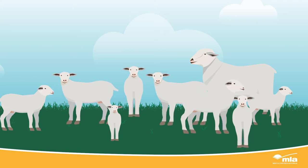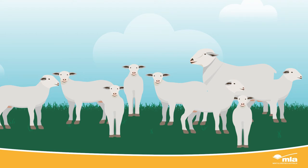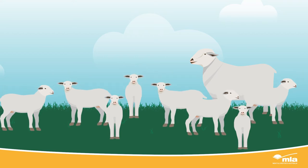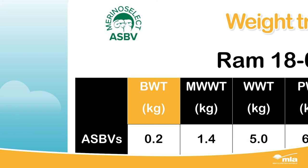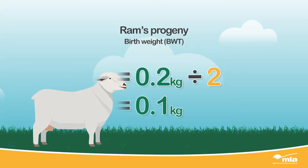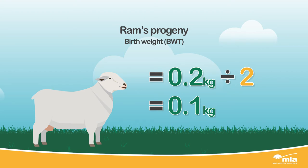Some producers need bigger lambs to assist survival, so select for a more positive value. Some producers are happy with the current birth weight of their lambs and want to maintain this, so select rams that are average for their flock. In our example, the ASBV for this ram's birth weight is 0.2 kilograms. Since only half his genetics will be passed on to progeny, it's estimated his progeny will be heavier by 0.1 kilograms compared to a ram with an ASBV of zero.